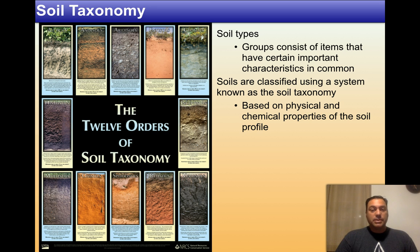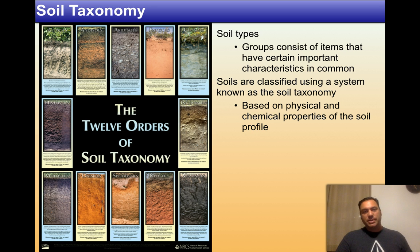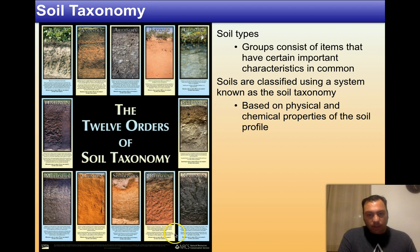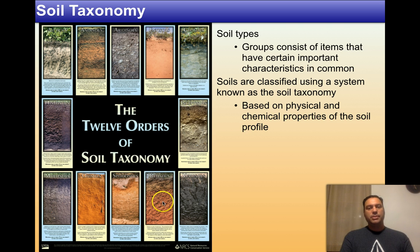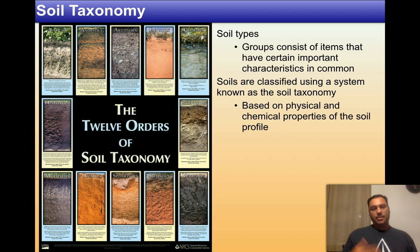Another way to describe soils is through soil taxonomy, very similar to how organisms are classified — kingdom, phylum, all the way down to species. Soils do the same thing, starting with 12 major orders at the top. This image from the Natural Resource Conservation Service of the USDA shows the 12 major orders of soil — andisols, aridisols, entisols, and others — with nice images of what they are. You should be able to find this chart online.